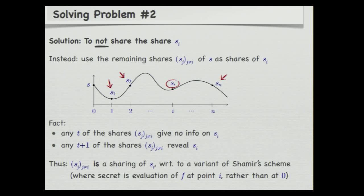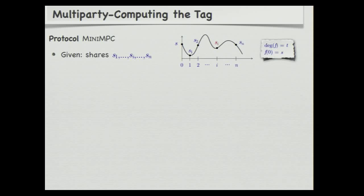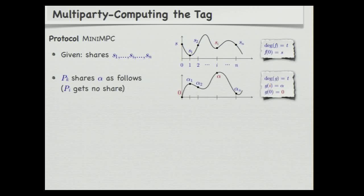In some sense, we're making use of a symmetry of Shamir's secret sharing scheme: it doesn't really matter in which slot we put the secret and in which slots we get the shares. With this idea, the actual multi-party computation scheme for computing these tags looks as follows. We have a sharing of a secret S, with share S_I for which we want to compute the authentication tag, and we use the remaining shares of S as shares of S_I.